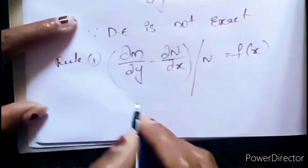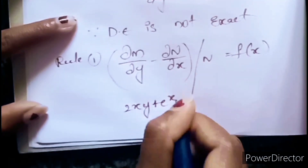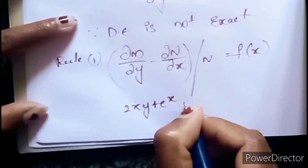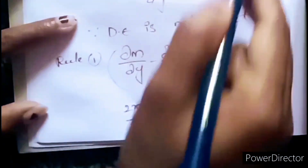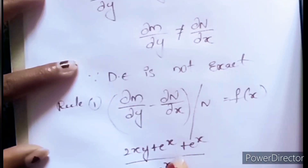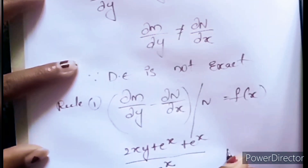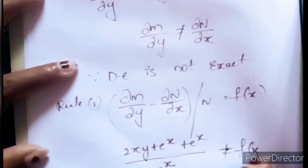Here ∂M/∂y is 2xy + eˣ and ∂N/∂x is −eˣ, so minus into minus becomes plus eˣ, divided by N which is −eˣ. There is no cancellation, so the answer will not be in the form of f(x). This will not equal f(x), so we go to Rule 2.